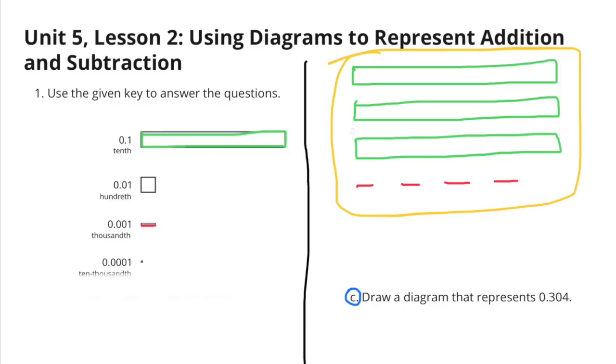C. Draw a diagram that represents 304 thousandths. So, here I drew three of the longer shapes and four of the dashes to represent 304 thousandths.